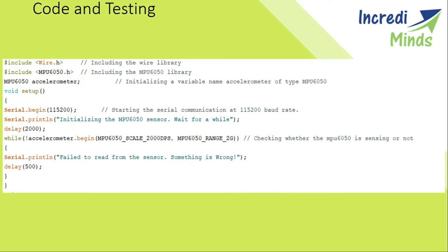Now we will look at the code. The Wire library, which you can see attached here, is used to allow the I2C communication between the Arduino and the sensor. This module communicates with the Arduino through the I2C protocol, so we need to add the Wire library. The MPU6050 library helps us to read from the sensor and get the pitch and roll values.